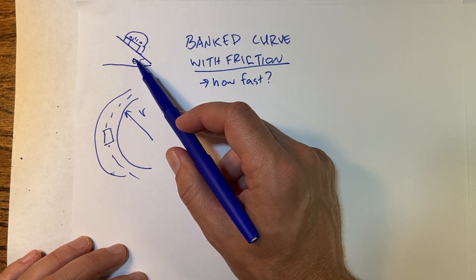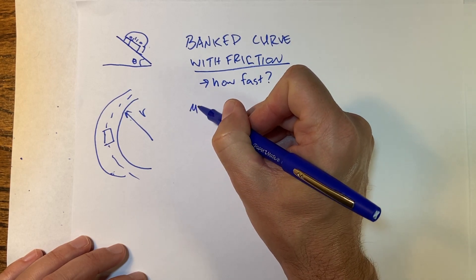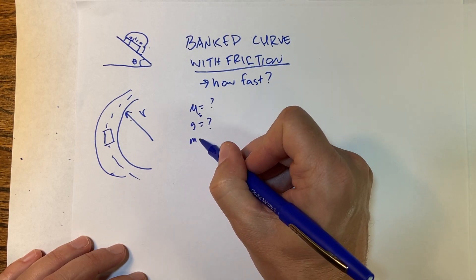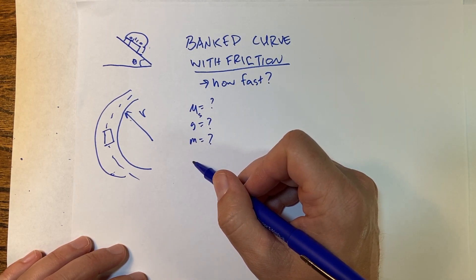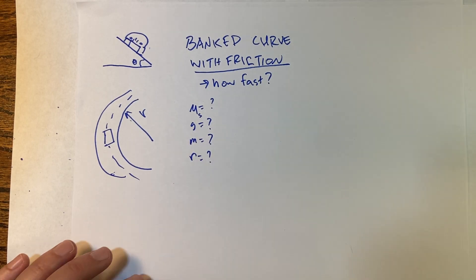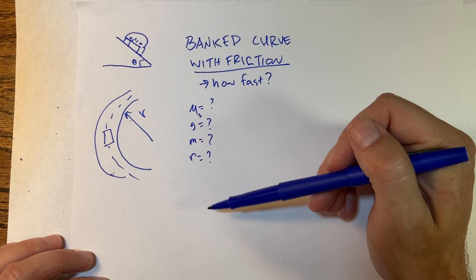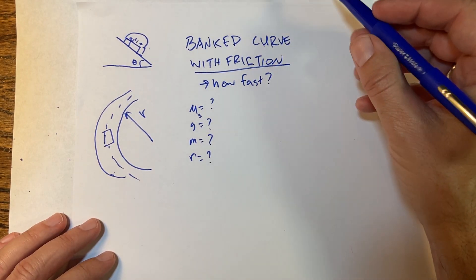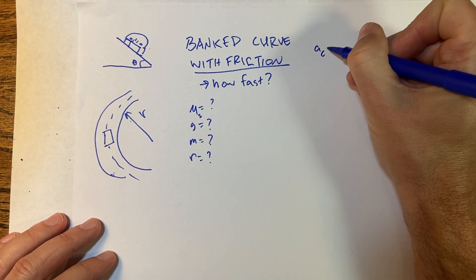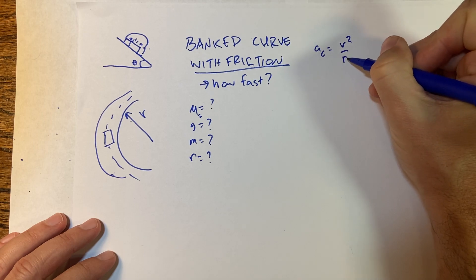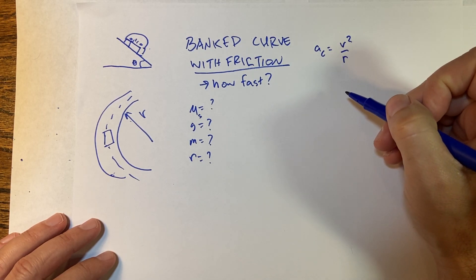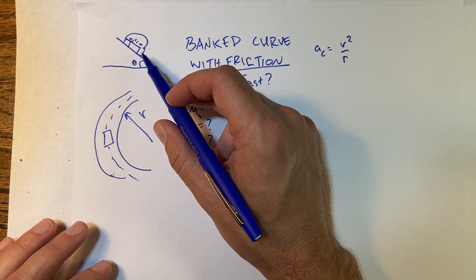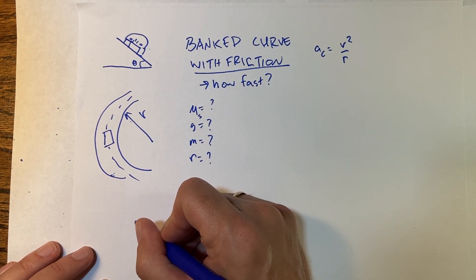I have the car going around a bank at an angle theta, and I need things like: what's the coefficient of static friction, what's g, what's the mass — it doesn't matter I don't think — and what's the radius. These are all things I can just pick values for, but right now I'm just going to use them as expressions. The two things we need to remember: the definition of circular acceleration — the acceleration of an object moving in a circle — and the direction is towards the center of the circle.